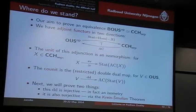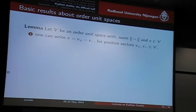The surjectivity will be proven via the Krein-Smulian theorem, which is a rather special theorem in functional analysis. Let me start with some basic results about order unit spaces, and I'll just list them without proof, just to give you an idea of what kind of things can be proven in such spaces.